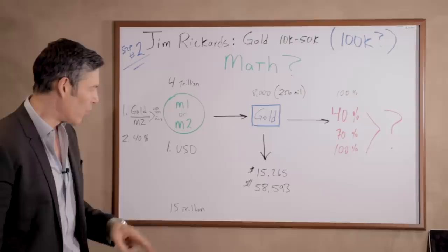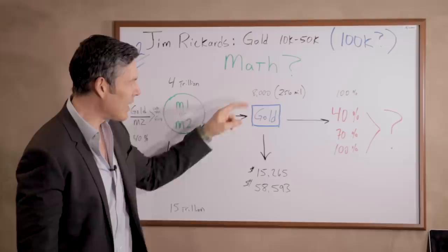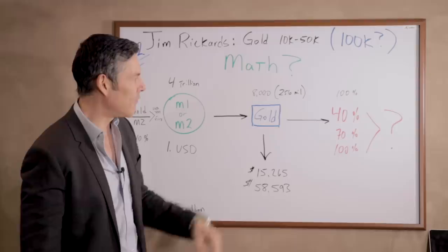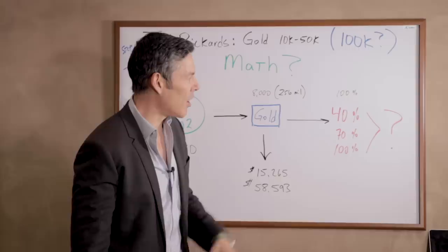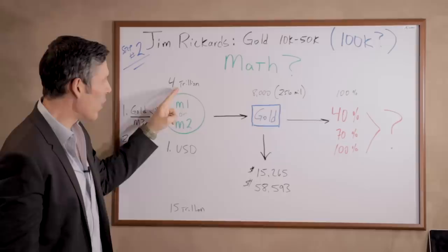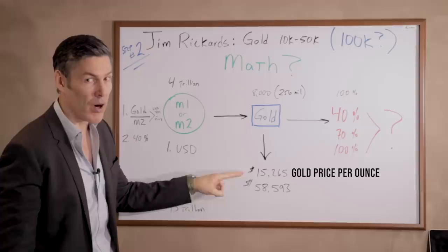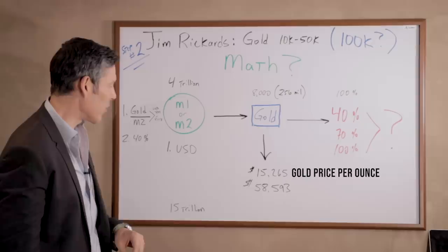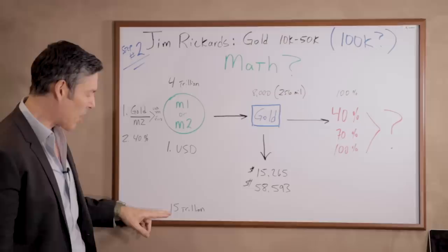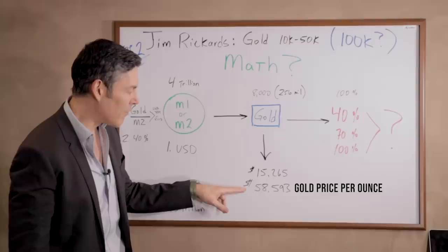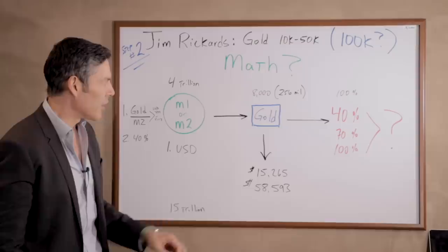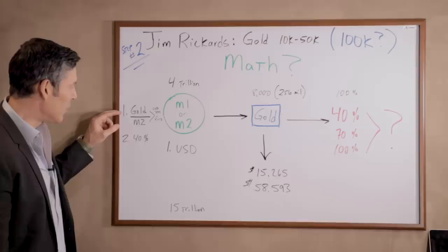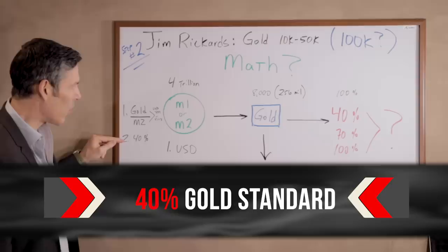Now let's use some real numbers with just the USD. M1 currently is right around $4 trillion. We've got 8,000 tons of gold, which equals 256 million ounces. For this example, we use 100% gold standard. Dividing $4 trillion by 256 million gives us a gold price of $15,265 per ounce. If we move that to M2, which is a much bigger money supply at about $15 trillion right now, the per ounce price of gold would need to be $58,593. Rickards, in his math, is using gold to M2 with multiple currencies and a 40% gold standard, which is why these numbers differ slightly from the 10 to 50,000 that he gives us.